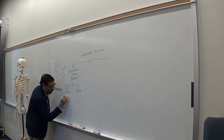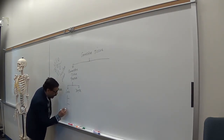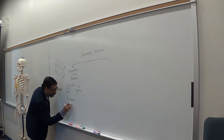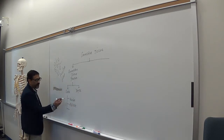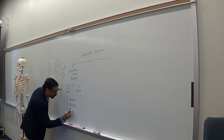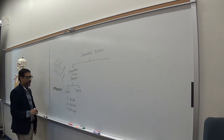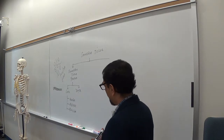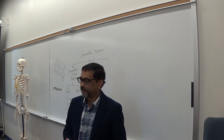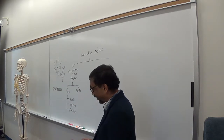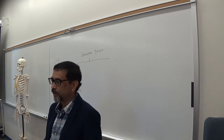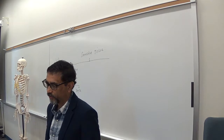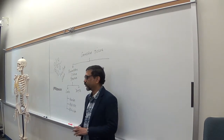Loose connective tissue can be areolar, adipose, or reticular — three types. We'll go over the pictures of those three types of loose connective tissue proper, looking at how they appear under the microscope. You've already seen this in the lab. I'll also mention a couple of important locations in the body where you'll find each type of tissue.